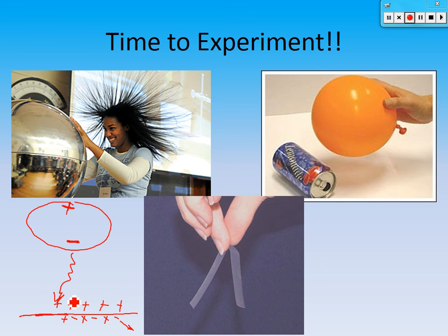To finish up, we're going to have some fun with experiments. We have a Van de Graaff generator set up in the back, the balloon and can demonstration, and some electroscopes. We can charge different pieces of tape with opposite or similar charges and show how opposite charges attract and similar charges repel. That's it for chapter six — hopefully we learned something and understand a bit better about gravity, electricity, tides, and static electricity.